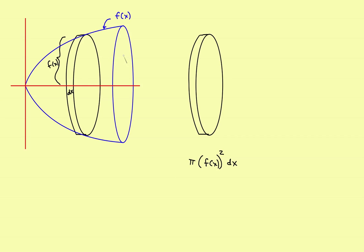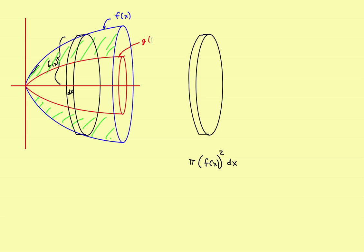Now let's put a second function in there. Suppose we have a cannon shell that has a hole in the middle of it. We started with a cannon shell and added a second function which basically drills a hole in the middle. This part up here and down here is going to be solid metal, and the part in the middle is going to be a hole. Let's call that second function g of x.